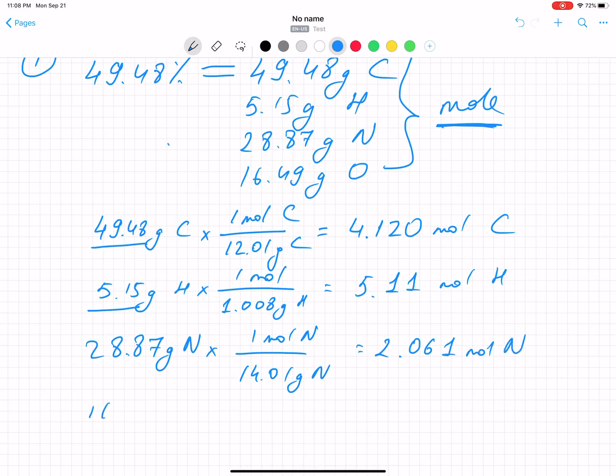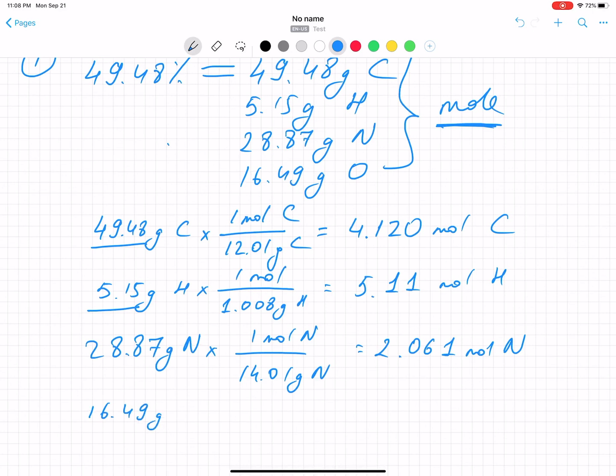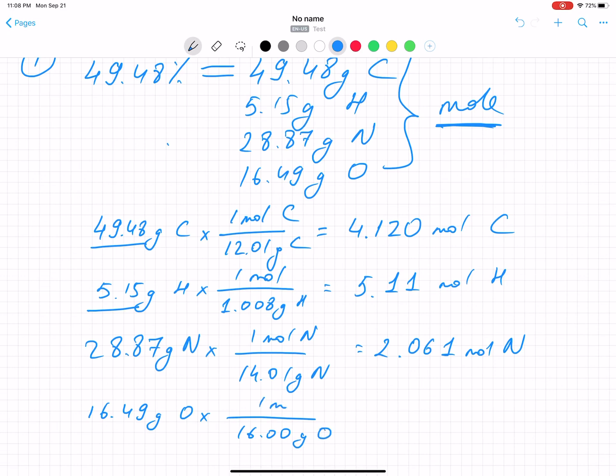The next number is oxygen. 16.49 grams of oxygen. One mole of oxygen is always 16.0 grams. So it's close to one, 1.031 mole of oxygen. As you see here, we have the numbers. Now, in order to identify the empirical formula, there is a rule. You need to divide by the smallest number.